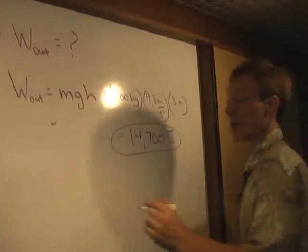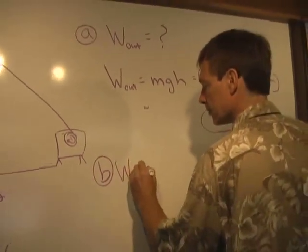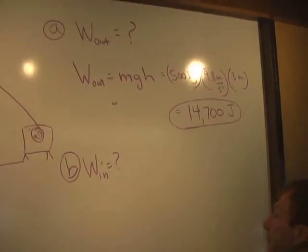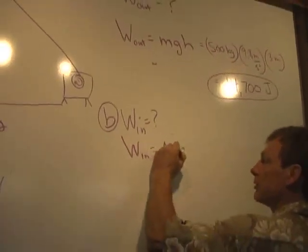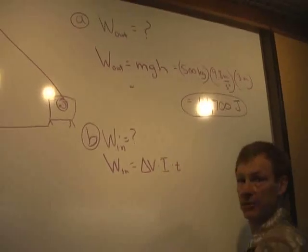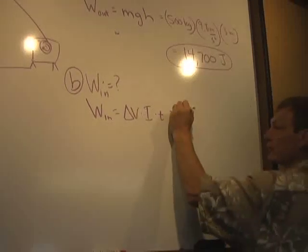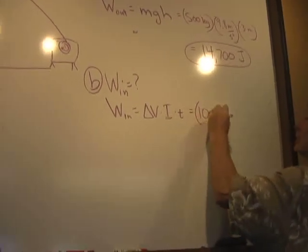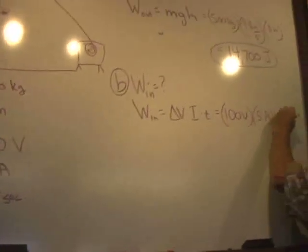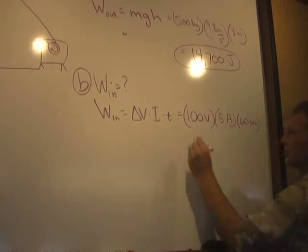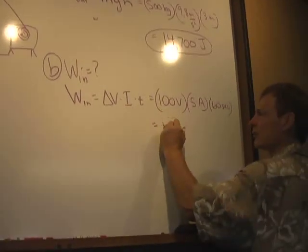Now, what went into doing that? That's the electrical work in. Let's see. The electrical work in is equal to the voltage times the current times the time, which is 100 volts times 5 amps times 60 seconds. Now what I'm going to do is I'm going to rewrite this just with a unit. I'm going to break these units down a little bit. Instead of 100 volts...